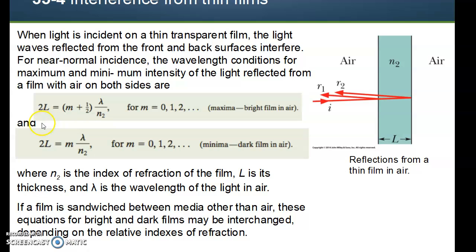This L is quite a bit different than the L we had in the prior equations. The prior equation, that L was the distance that the screen was away. Here, it's just the thickness of the film. If the film is sandwiched between media other than air, these equations for bright and dark film must be interchanged and depend upon the refractive indices of refraction. If you've got something that's denser than the two mediums on these sides, you have to interchange the two different formulas.